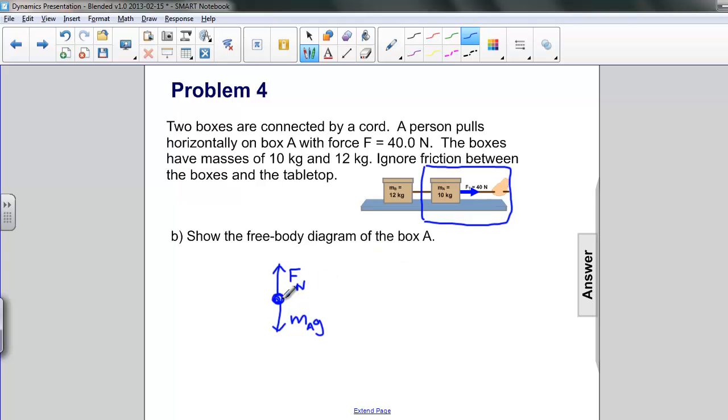Now let's look in the horizontal direction. There are two forces, one pulling to the right. That's the applied force. That's where we see the hand pulling. And in the other direction, opposing it, we have a tension that's in the cord that connects the two boxes. The last part of our diagram is to show an acceleration. And again, the acceleration is moving to the right. The applied force is larger than the tension.